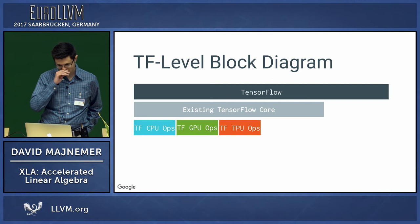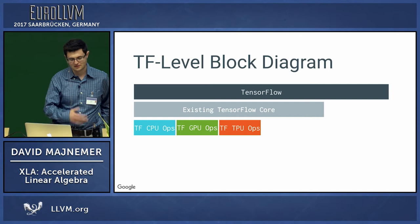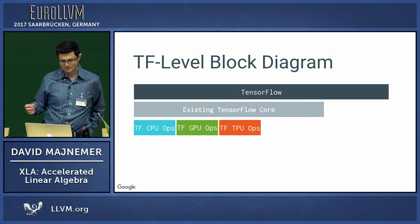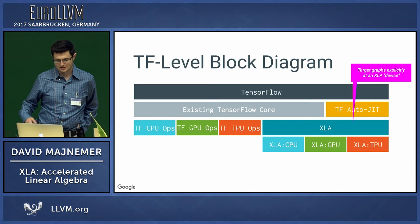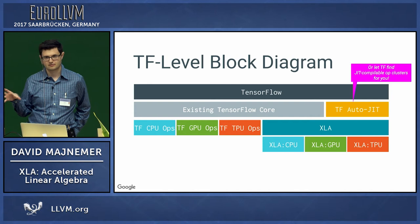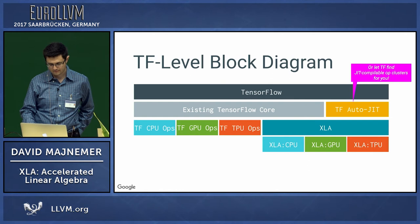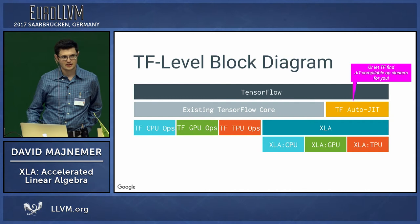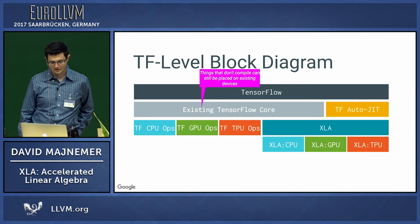To get from TensorFlow to XLA, traditionally ops are implemented per device — CPU ops, GPU ops, TPU ops. We introduce the XLA abstraction by building another kind of device. You can mark an op to run through XLA, or let TensorFlow find clusters of the graph compatible with XLA and automatically partition it. While we've implemented many ops, it's not complete, so you can still place unimplemented ops on an existing TensorFlow device.